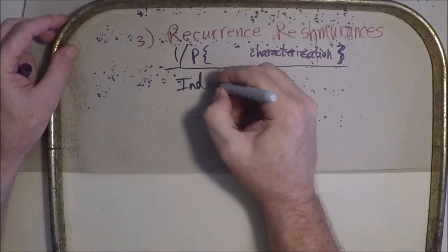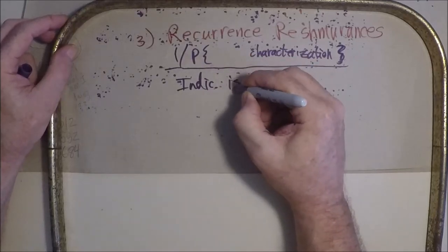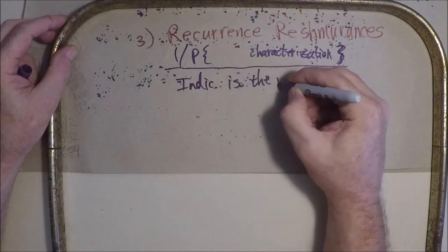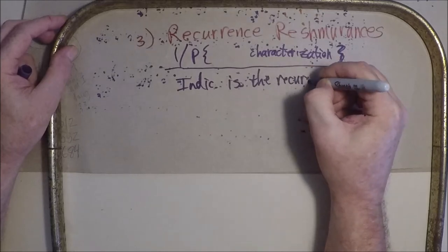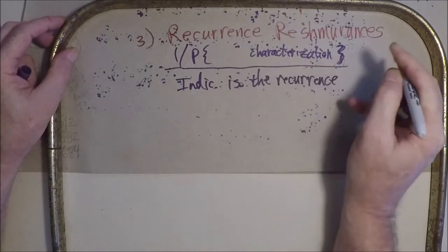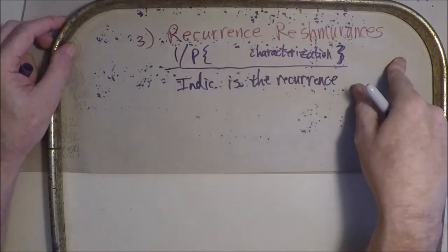The indicator sequence is the recurrence. Period. So, recurrence resmarrance.